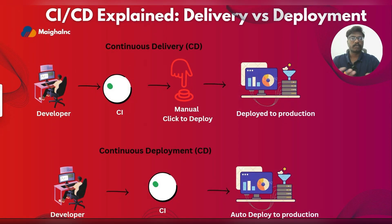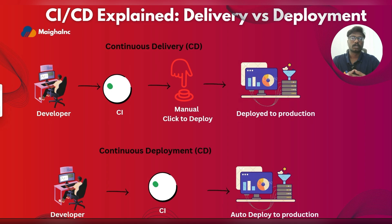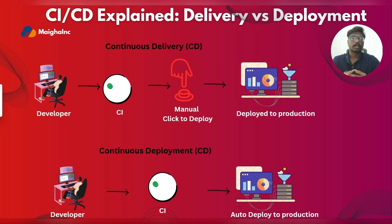In software development we hear the term CI/CD, but CD actually means two different things: continuous delivery and continuous deployment. Continuous delivery means the code is ready to go live, but someone has to manually approve it or click a button to release it. Continuous deployment means the code is automatically deployed as soon as it passes all checks — no one needs to press anything.